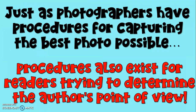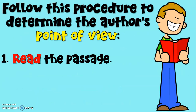Just as photographers have procedures for capturing the best photo possible, procedures also exist for readers trying to determine the author's point of view. So we're going to follow this procedure to determine the author's point of view. This is important because understanding point of view helps us understand more about the plot and the events in the story and is going to help us think more deeply about what we are reading. So the first thing you need to do, of course, is read the passage.